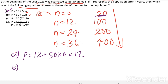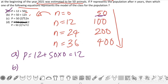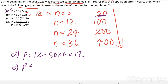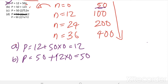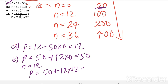Now see the second option. When n equals 0: p equals 50 plus 12 times 0, which gives 50 — so the initial population is correct. But when n equals 12: p equals 50 plus 12 times 12 equals 144 plus 50 equals 194. When n equals 12 it should be 100, so we can eliminate the second option also.